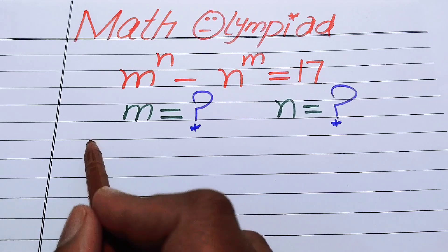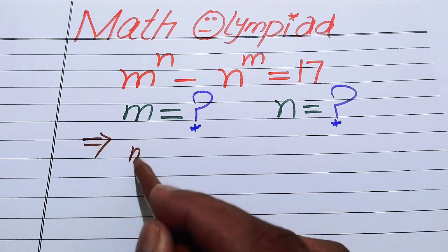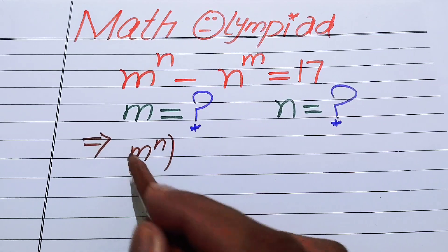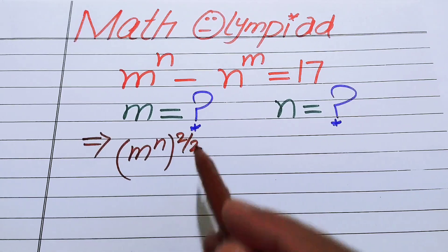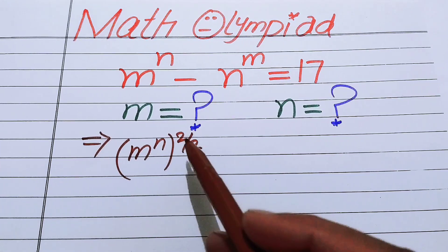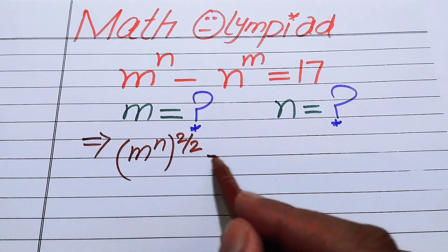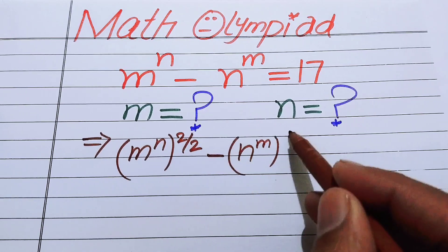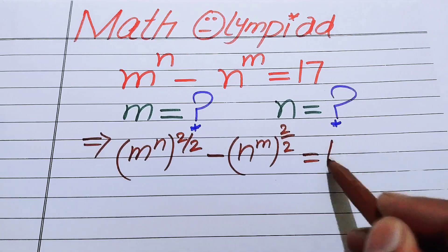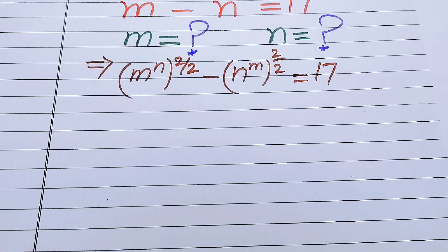The very first thing we are going to do is rewrite our given equation. We write m to the power of n as m to the power of n whole squared, divided by 2. We multiply the exponents of both terms by 2 and divide by 2, so we write n to the power of m as n to the power of m whole squared over 2, and it equals 17.